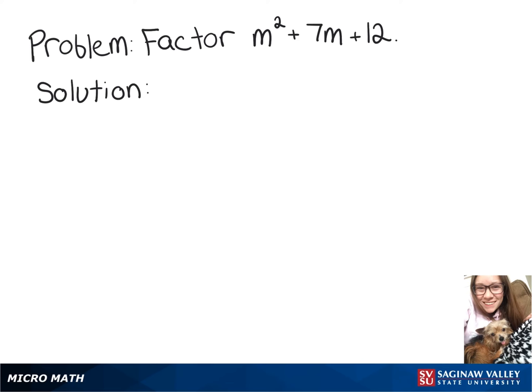We're going to factor m squared plus 7m plus 12. In order to do that, first we're going to think of numbers that you can multiply to give you 12.